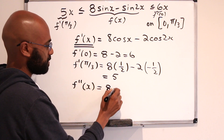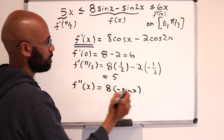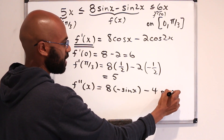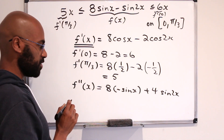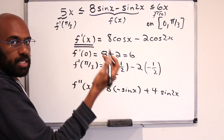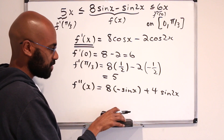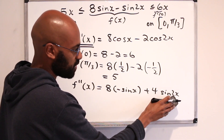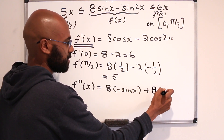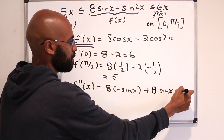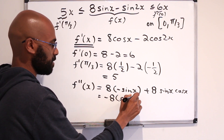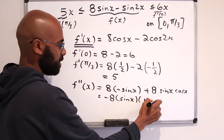The second derivative would be 8 times negative sin(x), and then by the chain rule, minus 4sin(2x), but with the negative we get a plus. To analyze whether the derivative is increasing or decreasing, it helps to factor this. We can rewrite sin(2x) as 2sin(x)cos(x), so the 4 becomes 8, giving us 8sin(x)cos(x). This factors as negative 8sin(x) times (1 minus cos(x)).